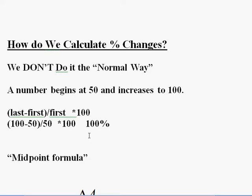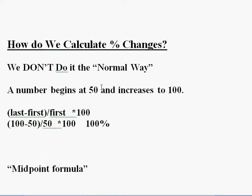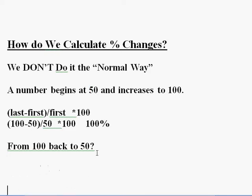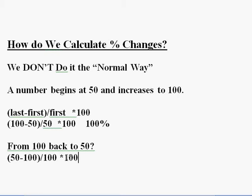But here's the problem: what if we went the opposite direction, down from 100 back to 50? Going from 50 to 100 is a 100% increase, so going from 100 back to 50 should be the same size. In your head you know it's a 50% decrease. Using the formula: (50 - 100) / 100 × 100 = -50 percent.